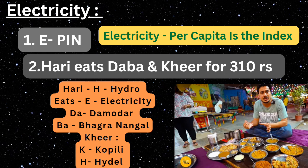Moving on to electricity: the shortcut is 'E-PIN,' where E stands for electricity and PIN stands for per capita is the index. That means the per capita consumption of electricity is considered as an index for development.